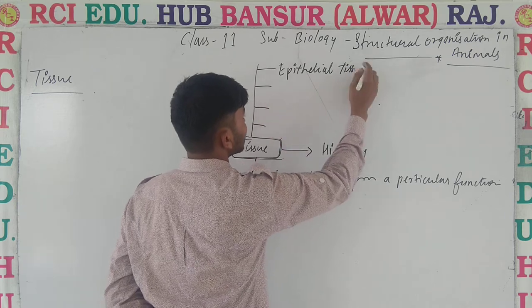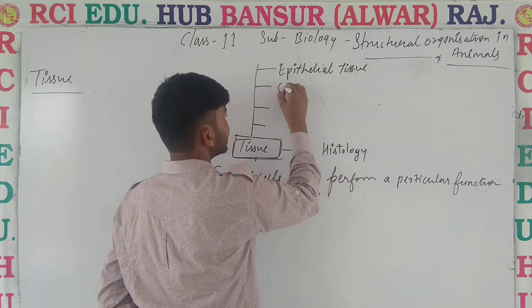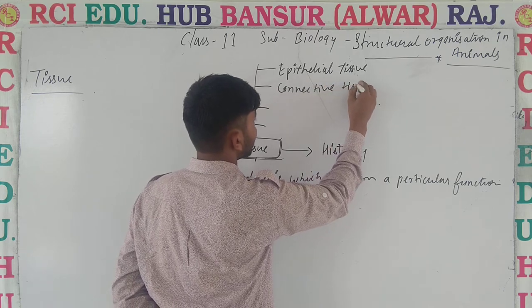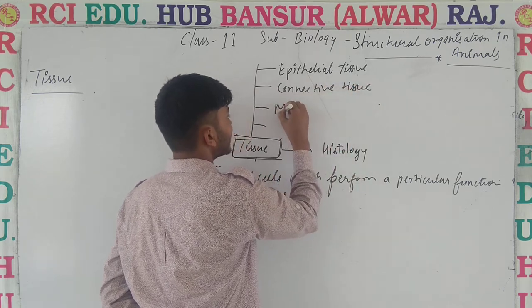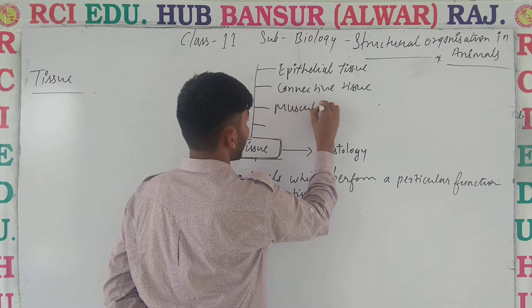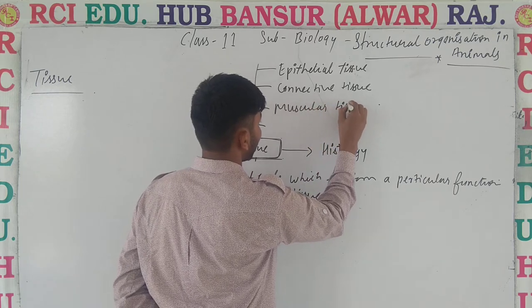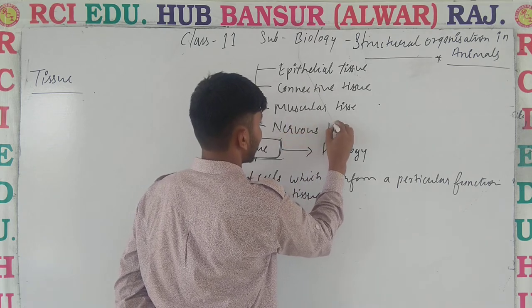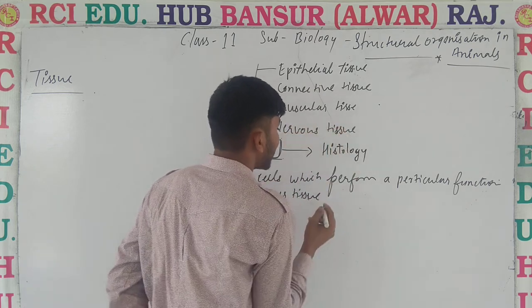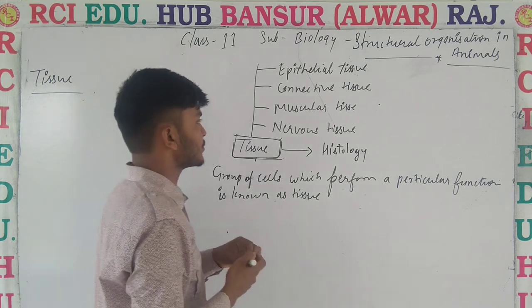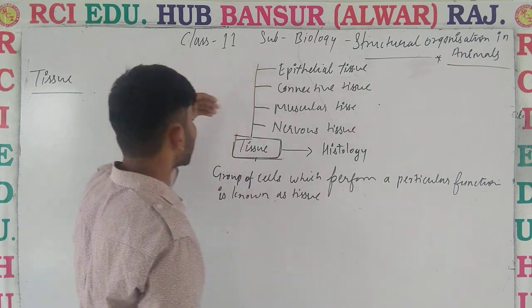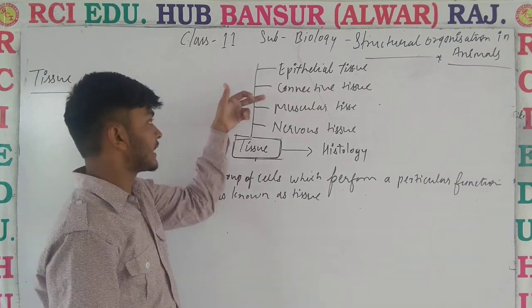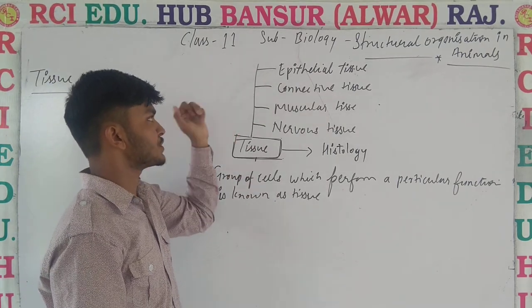Number two is connective tissue. Third is muscular tissue. And fourth is nervous tissue. In animals, there are basically four types of tissues: epithelial tissue, connective tissue, muscular tissue, and nervous tissue.